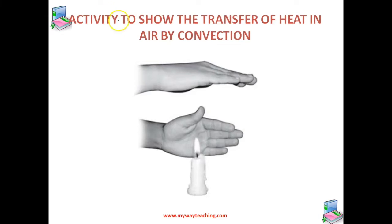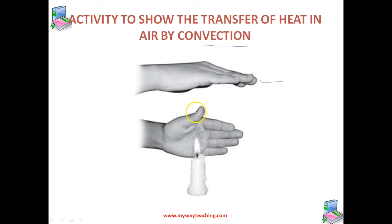Now let us perform one more activity to show the transfer of heat in air by convection. Fix a lighted candle on a table and keep one hand at a safe distance above the flame and another hand on the side of the flame. You will find that the hand kept above the candle flame feels quite hot, but the hand kept on the side of the flame does not feel any hotness.